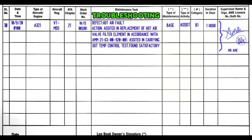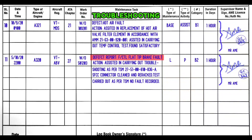Example for troubleshooting: write the reason — defect reported: flight control flap tip brake fault. Rectification action: write assisted, because troubleshooting is not directly done by the mechanic, technician, or trainee — it is done by the engineer. So always write: assisted in carrying out troubleshooting as per TSM, and give the TSM reference. Work done can be copied from what AMM states in the tech log or work order: SFCC connector cleaned and re-racked. Test carried out as per TSM, no fault recorded.